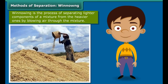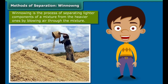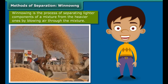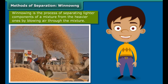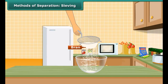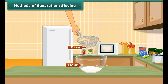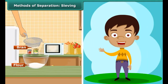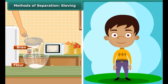During your numerous train trips through the countryside, you would have noticed women standing at a height, shaking a basket held over their heads continuously. They are separating the grain from the husk by simply allowing the wind to blow away the husk and other lighter impurities. The heavier grain falls down on the ground in a heap. This process of separating impurities from the grain by allowing a current of air to blow away the lighter impurities is known as winnowing.